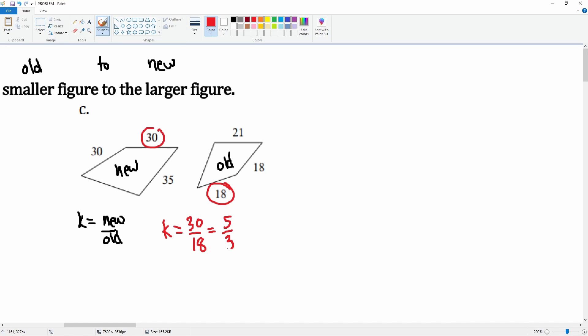5 over 3, or roughly 1.67. Okay, then we can do 18 and 30. K is 18 - nope - 30 over 18, which is the same, 5 over 3, or equivalently 1.67. There you go. Notice all these scale factors